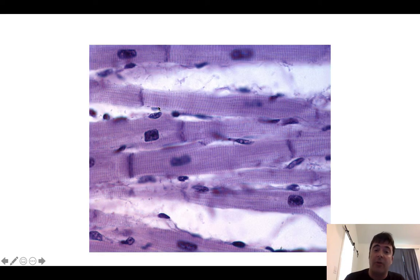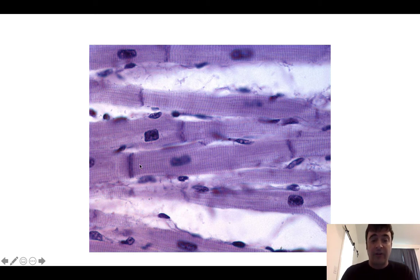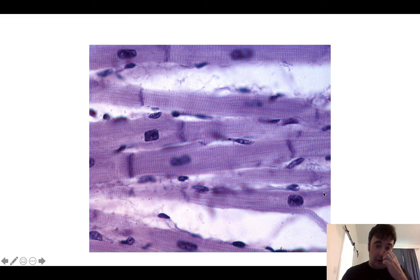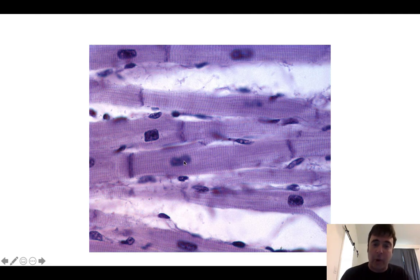At higher magnification of cardiac muscle tissue, you can see individual cells. At the end of each cell, what marks the end of one cell and the beginning of another are intercalated discs, which allow cells to communicate with each other. These cells also branch — that's so cardiac muscle can generate contractile force from multiple directions. You also see the striations or stripes.